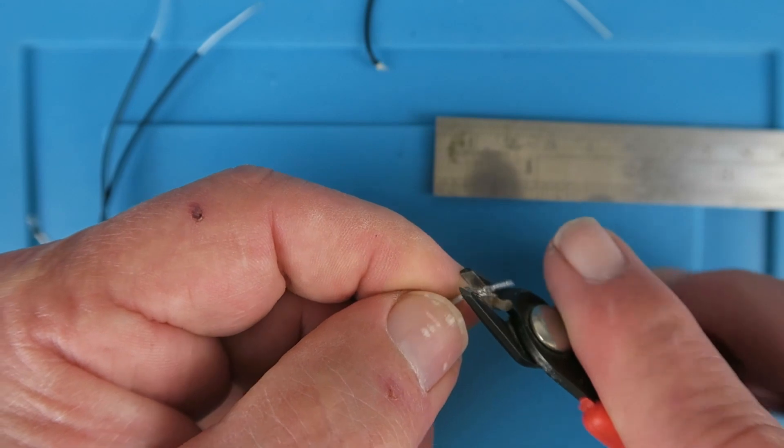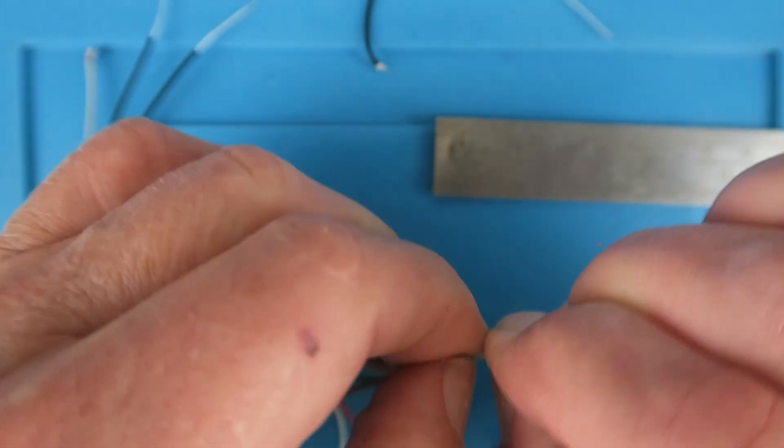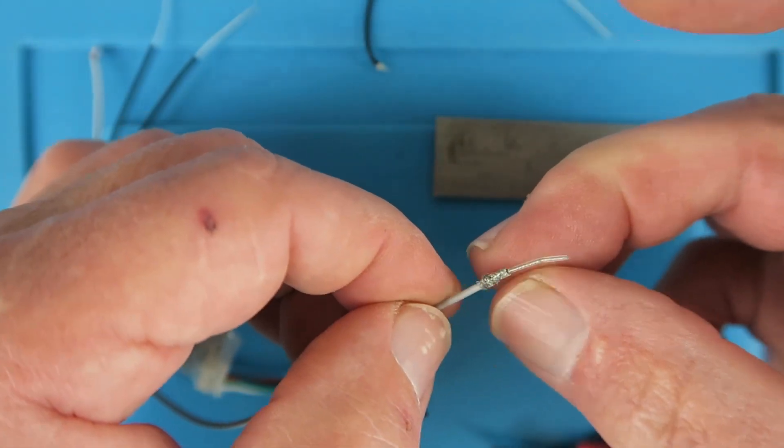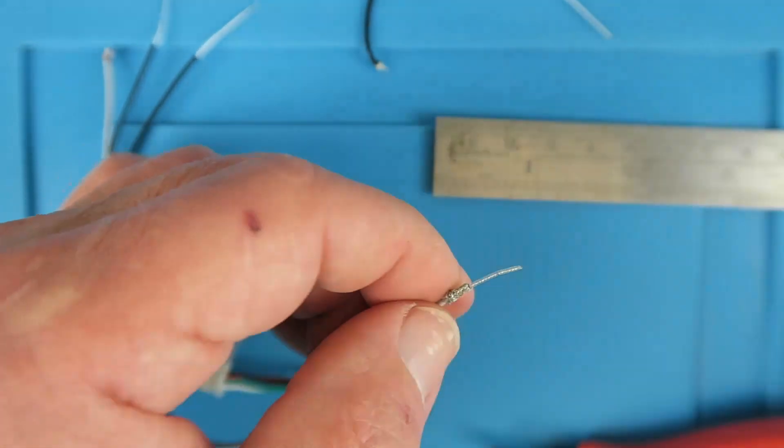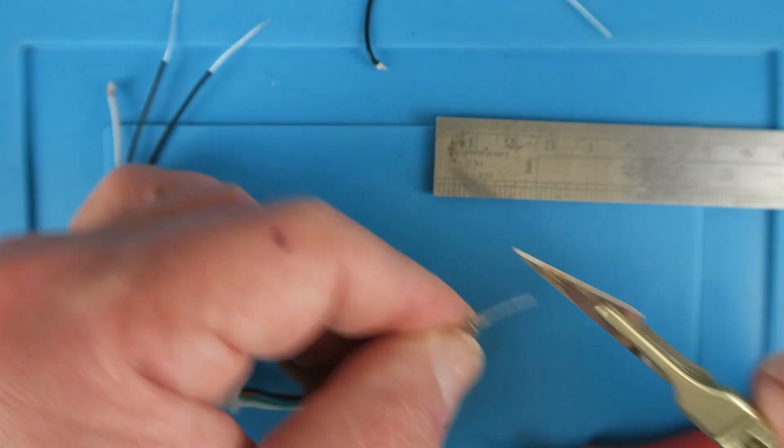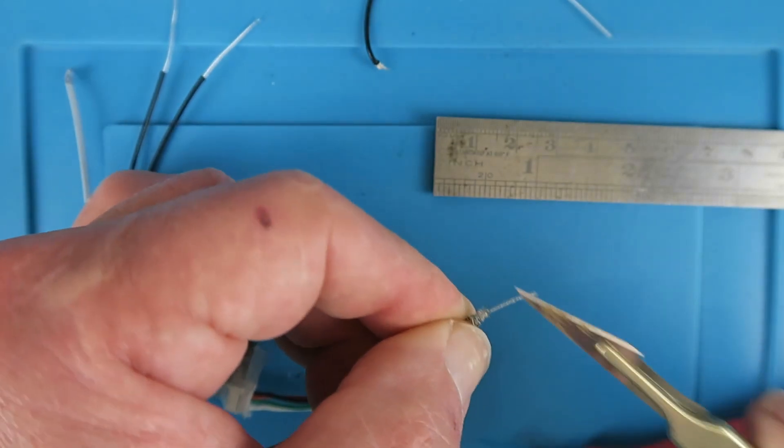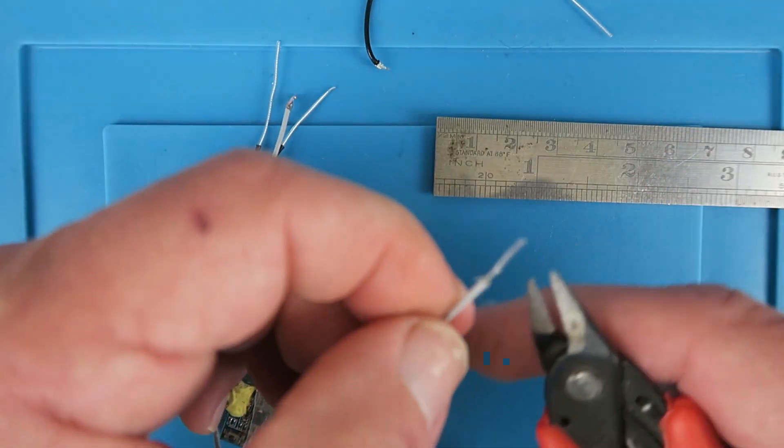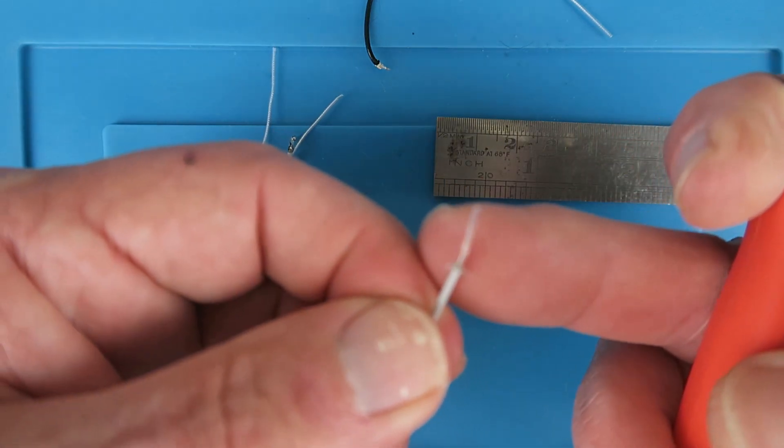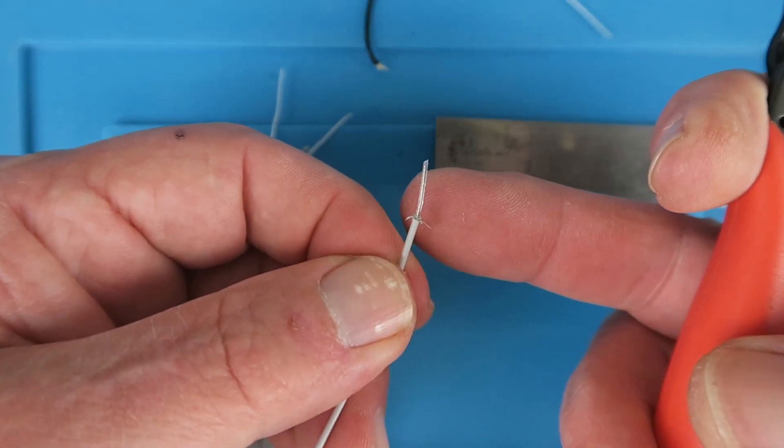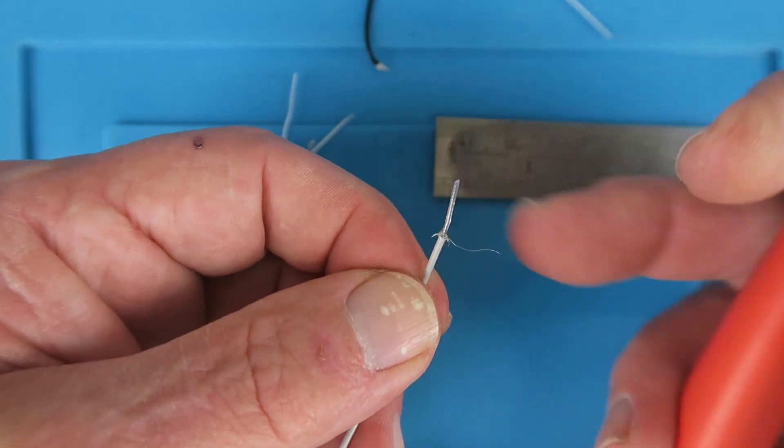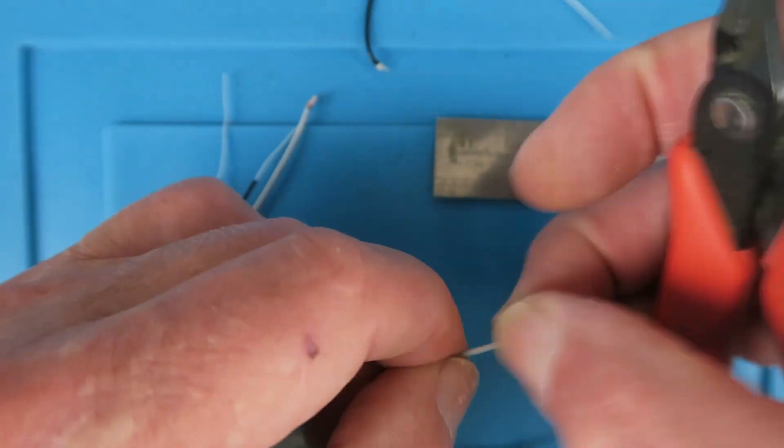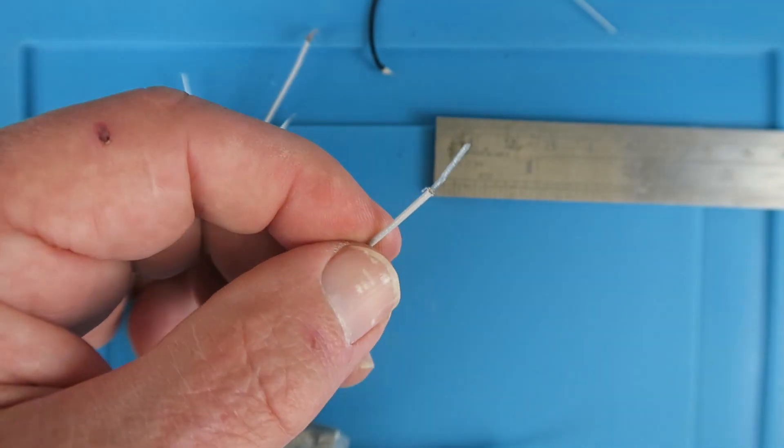Then what you can do is gently bunch that up and get it to move down over the sleeving, leaving that part exposed. Then either with side cutters or with a sharp knife you can go around and remove that part. Make sure you remove those whiskery pieces. You can see this piece here just for example. You wouldn't want that getting inside another receiver or anywhere else. And there we have the exposed portion.